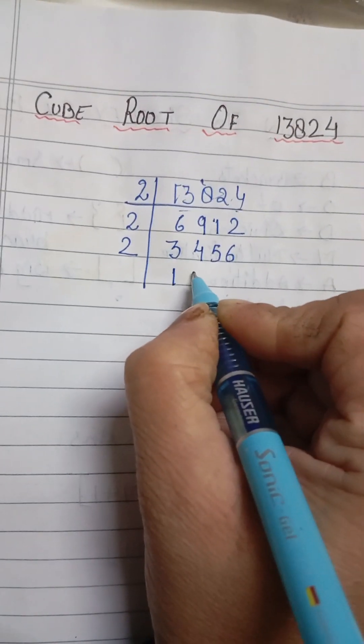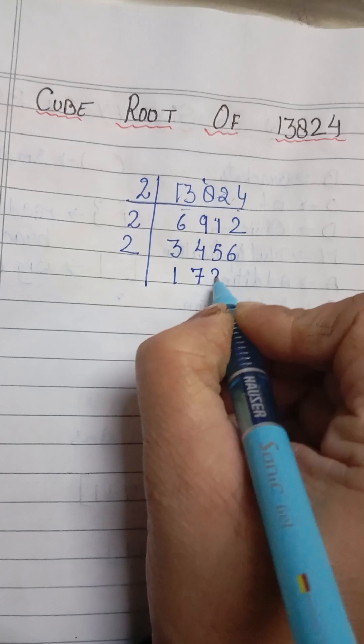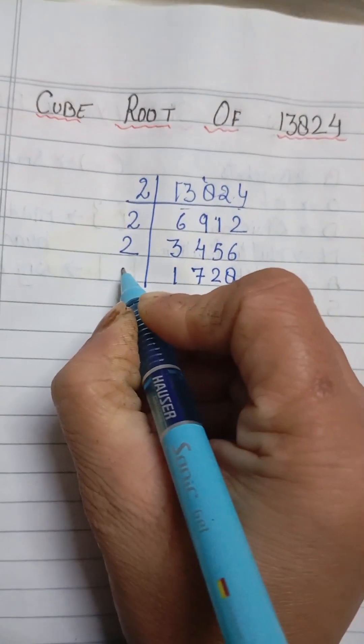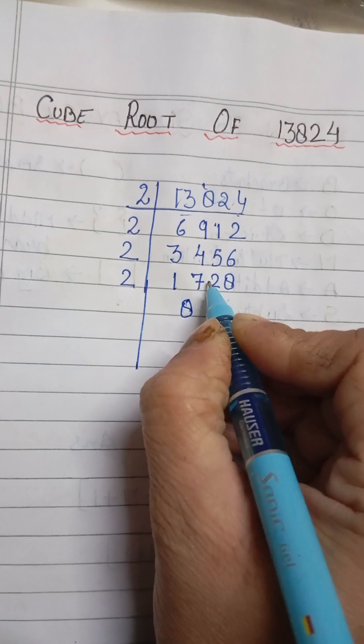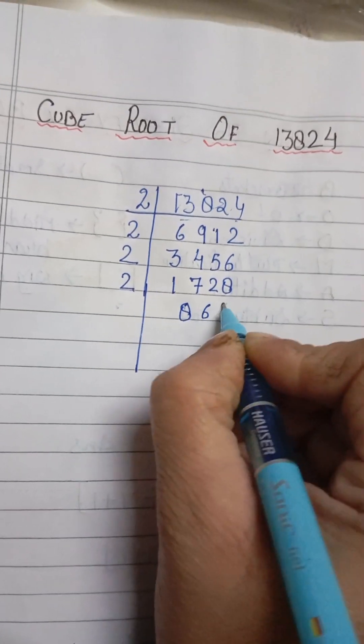Again, it is divisible by 2. 2 times 1 is 2. 2 times 7 is 14. 2 times 2 is 4. And 2 times 8 is 16. It is also an even number. So, 2 times 8 is 16. Remainder is 1, 12. 2 times 6 is 12.